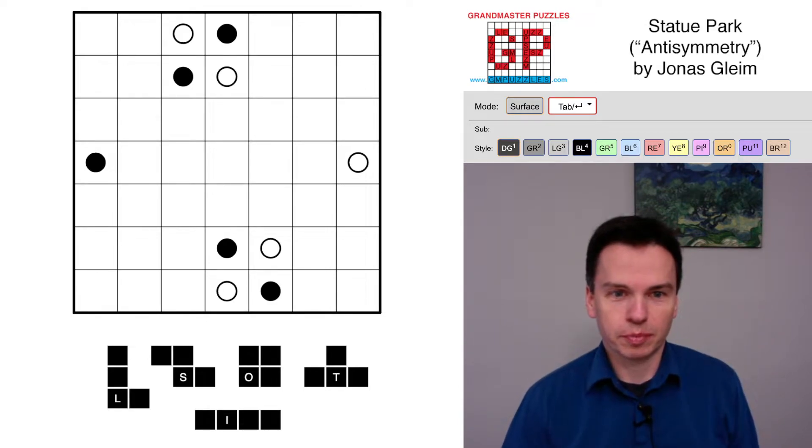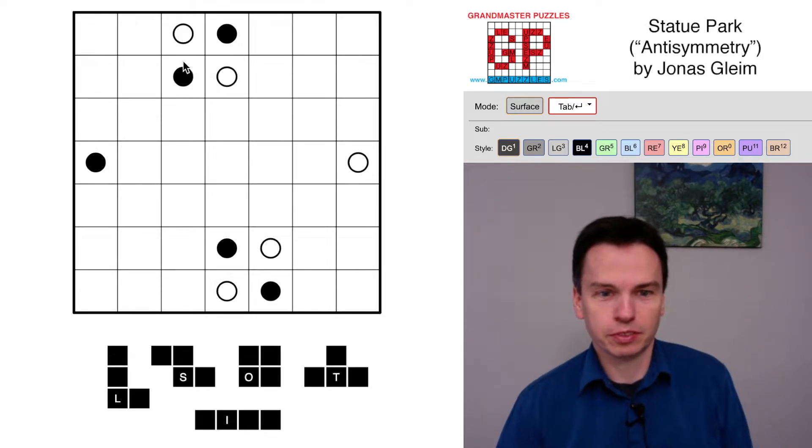We're here to talk through this Statue Park puzzle by Jonas Gleim with an anti-symmetry theme using a default set of tetrominoes. One thing I'm seeing at the start is I've got five black clues, all of them at least five cells apart, so they are reflecting the five distinct shapes. Each clue is going to be one shape.